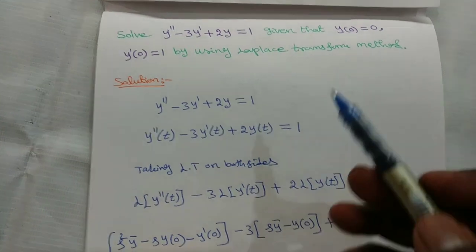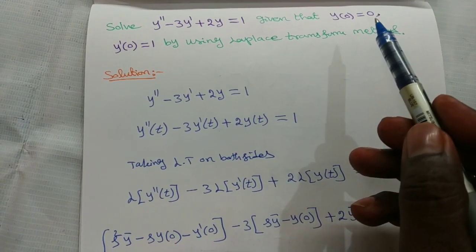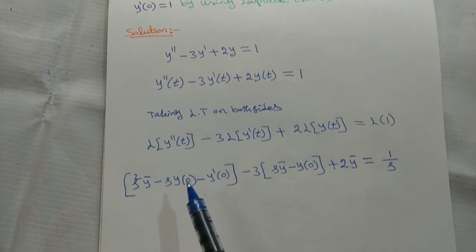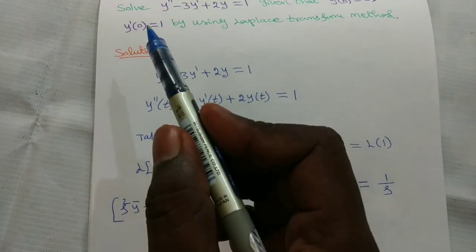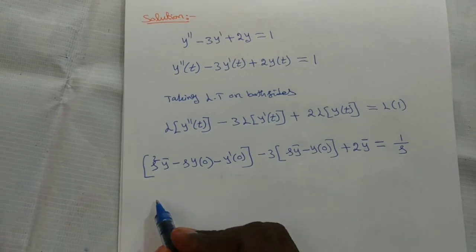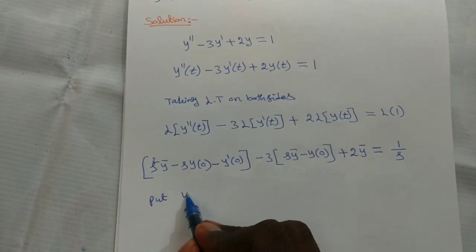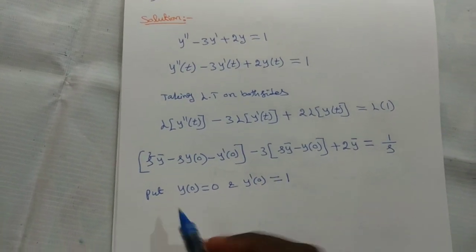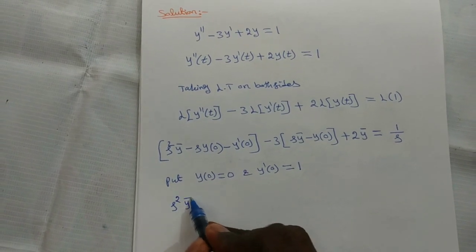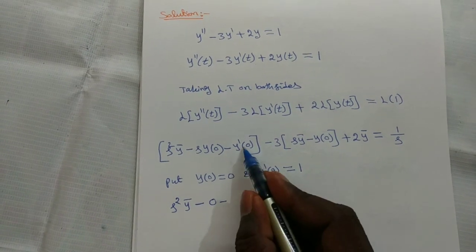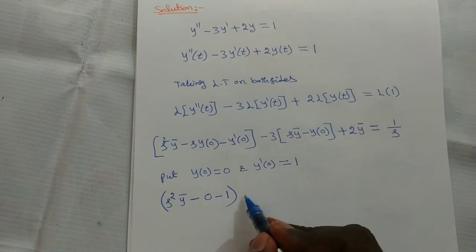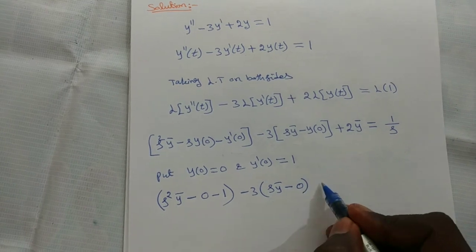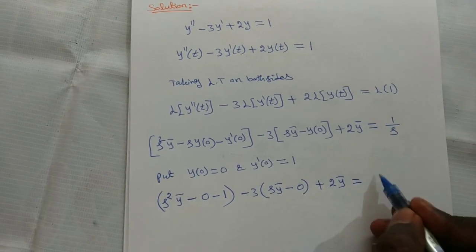Now substituting the initial conditions y of 0 equal to 0 and y dash of 0 equal to 1: s squared y bar minus 0 minus 1 minus 3 times (s y bar minus 0) plus 2y bar equal to 1 by s.